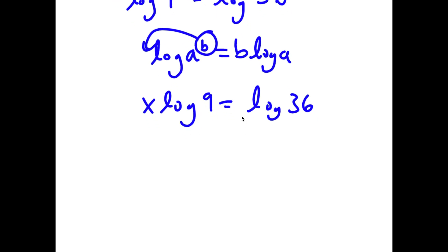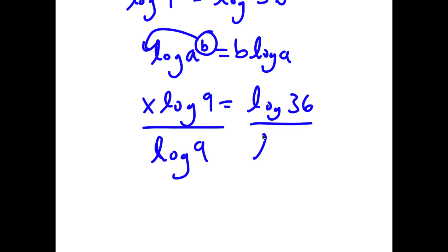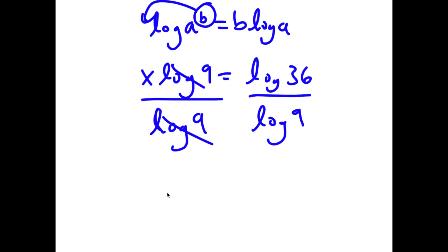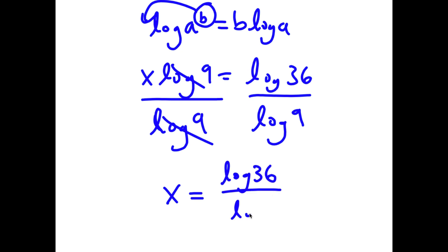Now I'm going to go ahead and divide both sides by log of 9. These two cancel out, and now I get x is equal to log 36 over log 9.